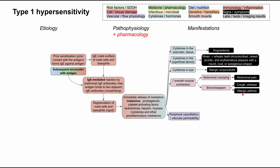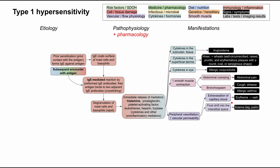In the peripheral vasculature, the patient might have vasodilation. Histamine and prostaglandin are powerful vasodilators. Vasodilation leads to increased vascular permeability, and when vascular permeability increases, you'll have extravasation of capillary blood into surrounding tissues, resulting in erythema — redness of the skin that can form a rash. In addition to blood, fluid shifts into the interstitial space, resulting in edema — lower extremity edema in the legs, and potentially pulmonary edema leading to coughing and dyspnea.